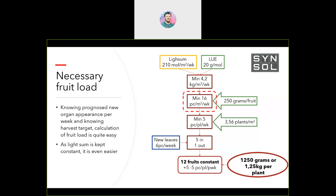If we have more light, we pick more kilos. Knowing our 250-gram average fruit weight, we divide 4.2 kilos by 250 grams and get that we need to pick around 16 fruits per square meter per week. With 3.56 plants per square meter, dividing 16 by 3.56 gives us a minimum of 4.5 fruits we need to pick per plant per week.